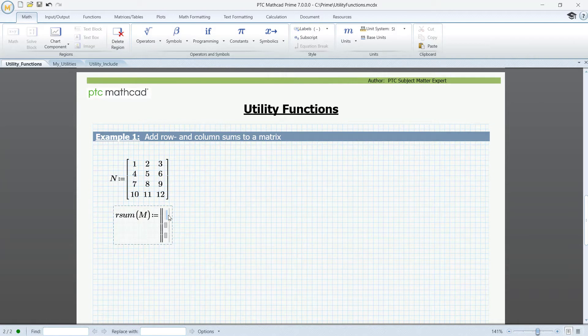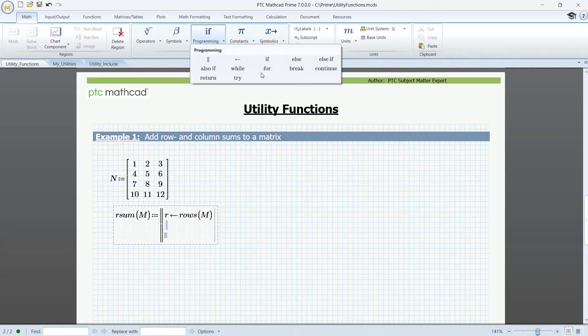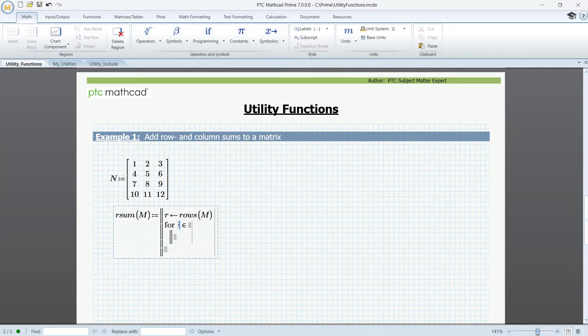First, define a variable to contain the number of rows in the matrix m. So rows, m. Next, we need a for loop to traverse all the rows. So programming, click for, let i be the row counter, and it runs from 0 to r-1, since the origin by default is 0.